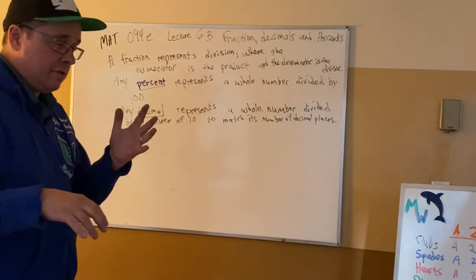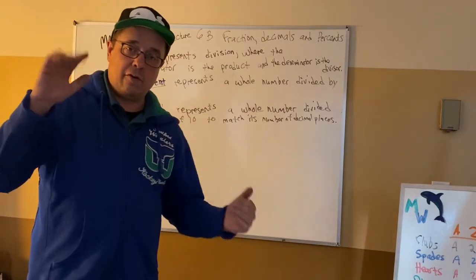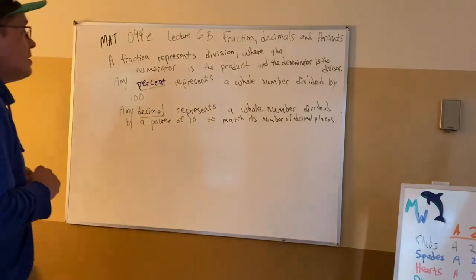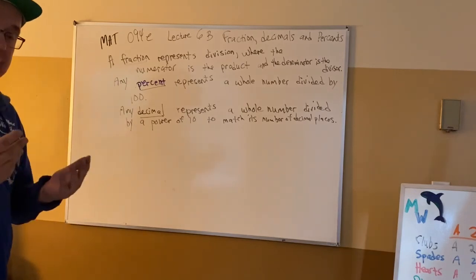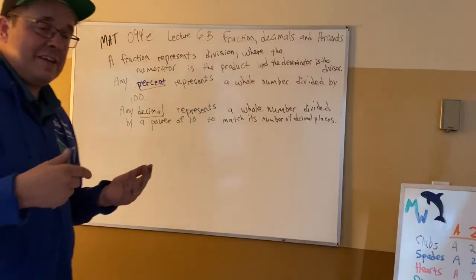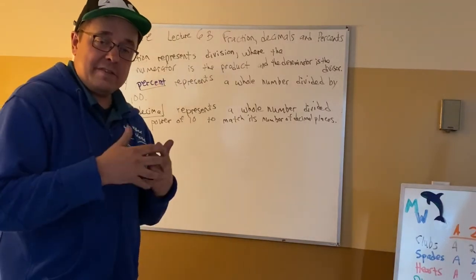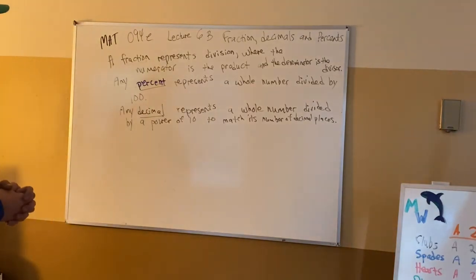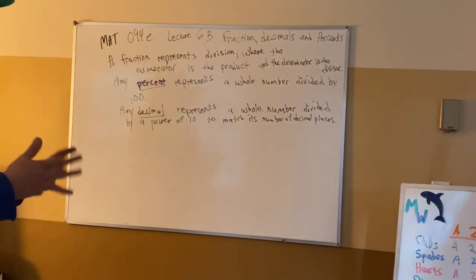Because we can go 1, 2, 3, 4, 5, 6, 7, 8, 9, 10 — start over, write 10. That's what causes the decimal point. DECI — D-E-C-I — is from the base word for 10 in Latin.